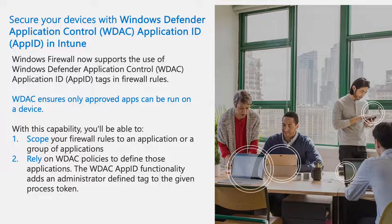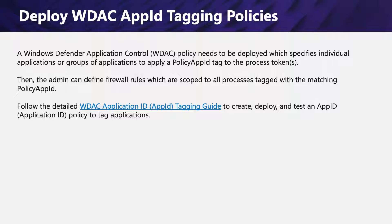You can do this with publisher rules, for example, relying on WDAC policies to define the applications you want to create rules for. The WDAC App ID functionality adds an administrator-defined tag to the given process. To deploy a WDAC App ID policy, a Windows Defender Application Control policy must be created and deployed, specifying individual applications or groups of applications to apply a policy App ID tag in the process token. An administrator can then define firewall rules scoped to all processes tagged with a matching policy App ID. We have published the WDAC Application ID Tagging Guide to help you create, deploy, and test an App ID policy.